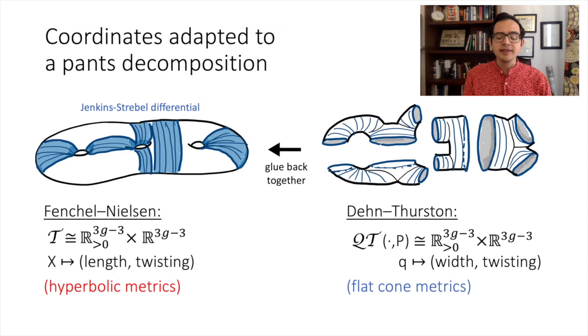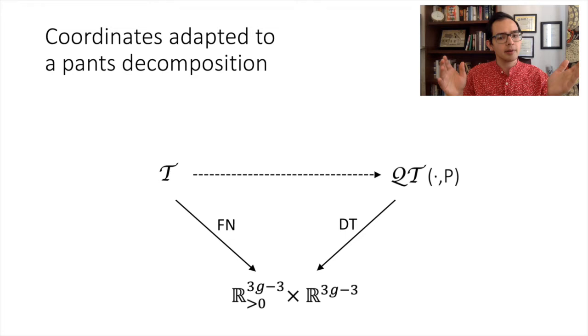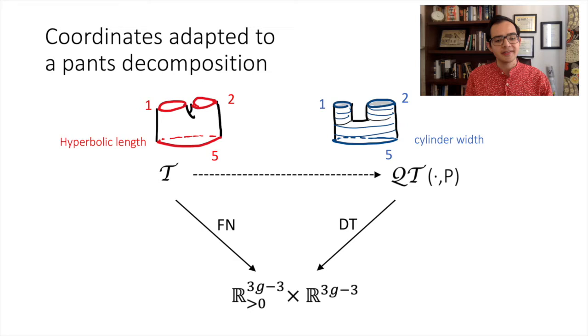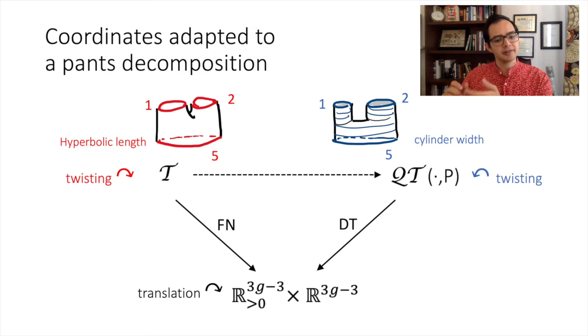We can put these two coordinate systems together into a commutative triangle. Passing through the coordinates, we get a map from hyperbolic structures to Jenkins-Strebel differentials which takes hyperbolic length to flat length. There's one more salient feature I'd like to highlight: not only do hyperbolic structures and Jenkins-Strebel differentials share a common coordinatization, but they share a common group action — namely, both spaces carry twist flows. On the hyperbolic side, you cut along geodesics and re-glue after twisting, while on the flat side, you twist along a cylinder. Both coordinate systems take twisting to translation, so by passing through the coordinatization we get a map which conjugates hyperbolic twisting and flat twisting. Our goal for the rest of the talk is to emulate this picture for the earthquake and horocycle flows, which are just generalizations of hyperbolic and flat twisting respectively.